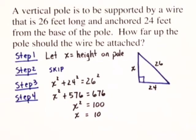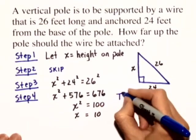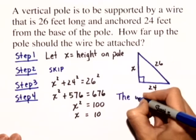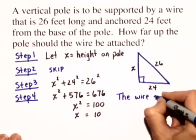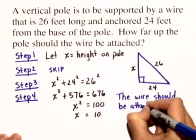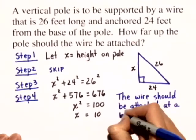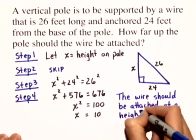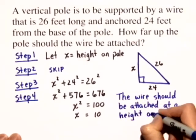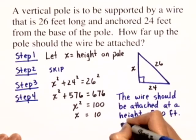So, we're ready to state our answer now. The answer is that the wire should be attached at a height of 10 feet on the pole.